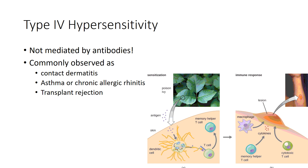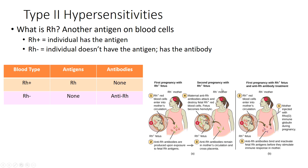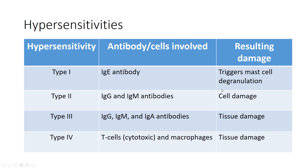The last type of hypersensitivity is type 4. Type 4 is not mediated by antibodies and most commonly shows up as contact dermatitis. A great example is the reaction we see to poison ivy — when someone comes in contact with poison ivy, it activates dendritic cells in the skin, causing a localized inflammatory reaction seen as dermatitis, an itchy inflamed area. As you study chapter 19, pay close attention to the table and make sure you can classify the different types of hypersensitivities.